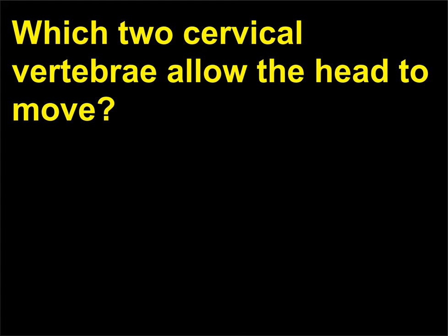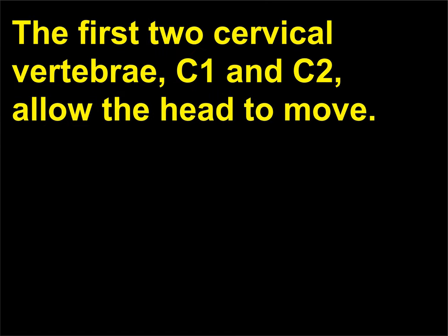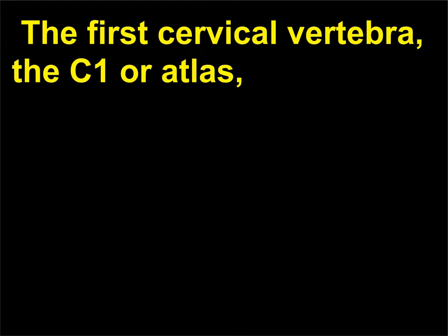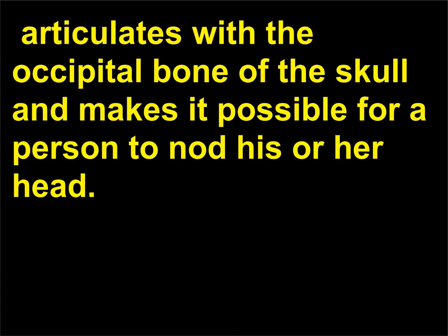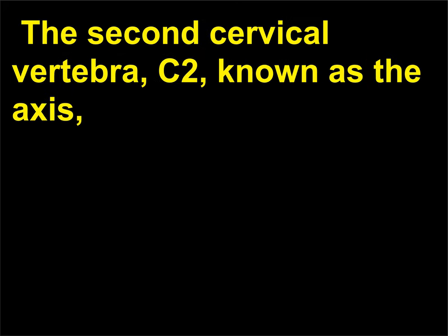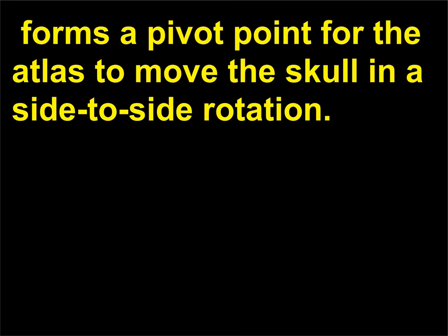Which two cervical vertebrae allow the head to move? The first two cervical vertebrae, C1 and C2, allow the head to move. The first cervical vertebra, the C1 or atlas, articulates with the occipital bone of the skull and makes it possible for a person to nod his or her head. The second cervical vertebra, C2, known as the axis, forms a pivot point for the atlas to move the skull in a side-to-side rotation.